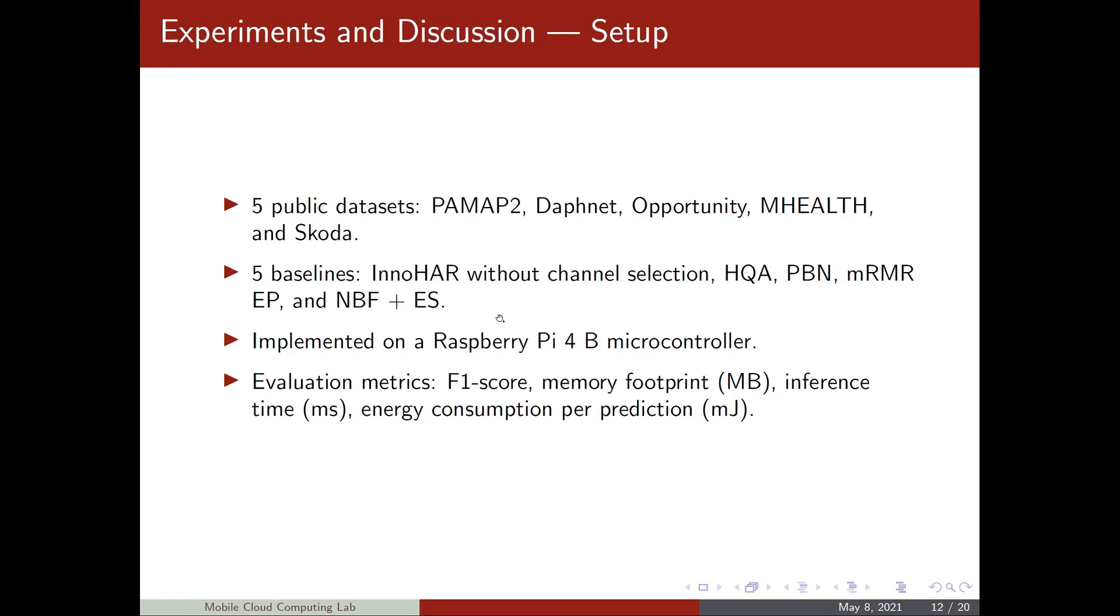To compare our pipeline, we have five baselines. The first one is InnoR, which includes simply all the sensor channels. Then we have sensor channel selection methods such as HQA, PBN, MR, EP and NBF plus exhaustive search. These methods are all implemented on a Raspberry Pi 4B microcontroller. And as evaluation metrics, we use F1 score, memory footprint, inference time and energy consumption per prediction.